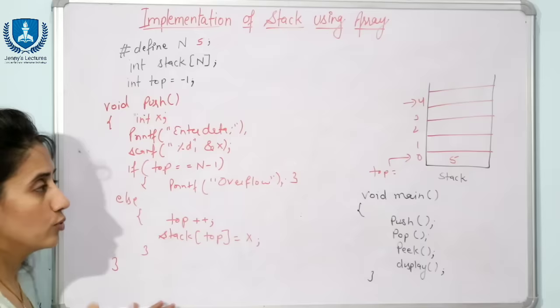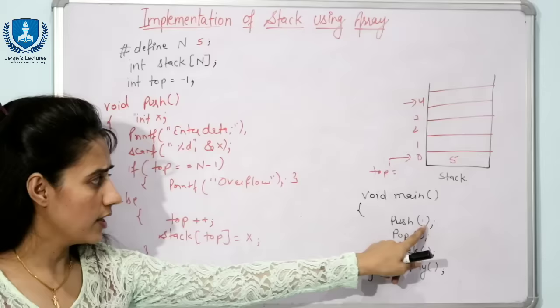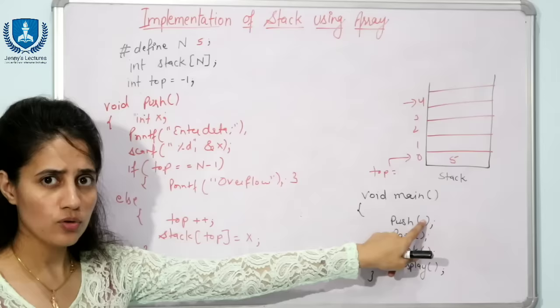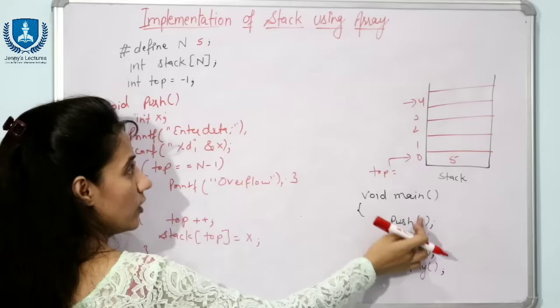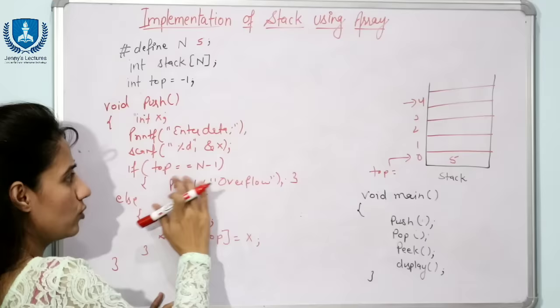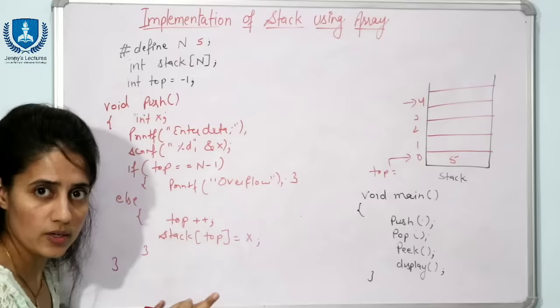Alternatively, if you want to pass the argument to push — for example, calling push(5) — then declare the function as void push(int x) to receive that value directly. In that case, no need to write printf and scanf; you can directly write the insert statements using the received parameter.